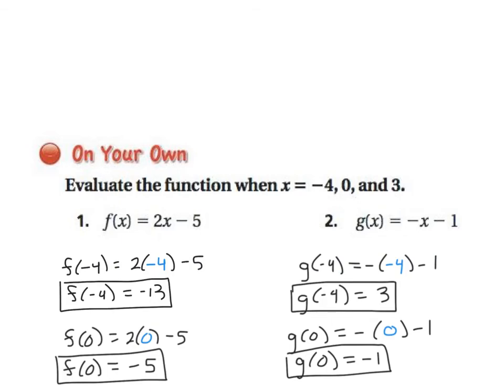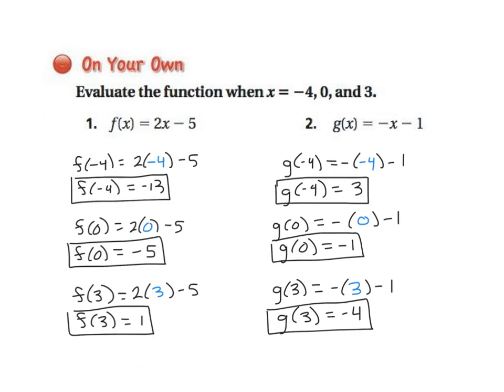Okay, let's check our answers. So here you can see that I showed all of my substitution. So I showed f of negative 4. So I substituted x with negative 4, and then x with 0, and then x with 3. And here, negative 8 minus 5 is negative 13. So f of negative 4 is negative 13. 0 minus 5 is negative 5. So f of 0 is negative 5. And 6 minus 5 is 1. So f of 3 is 1.